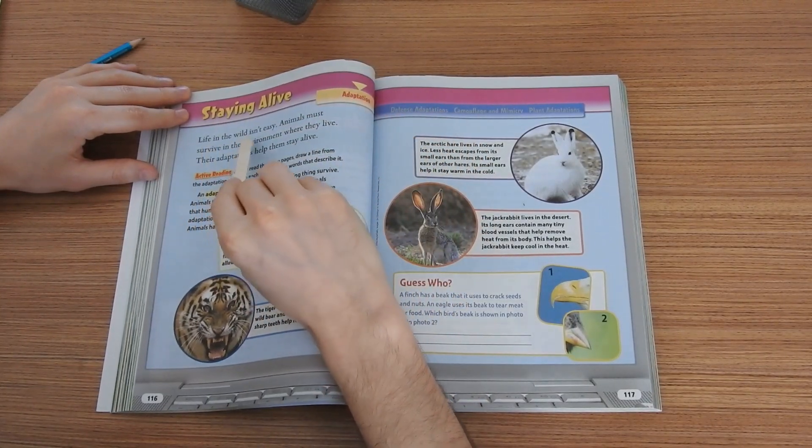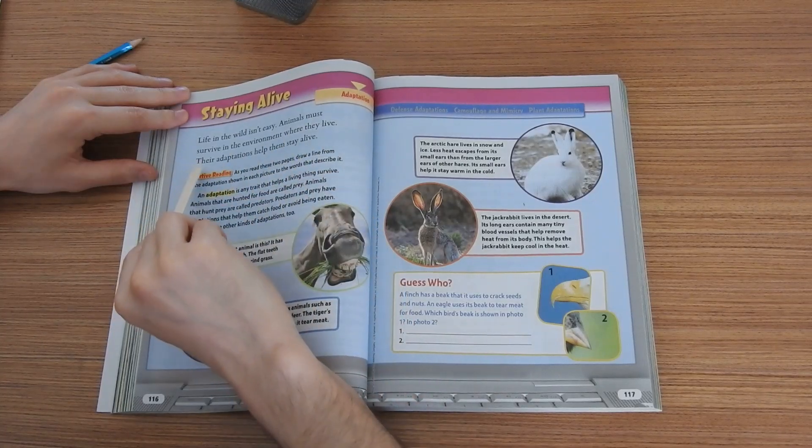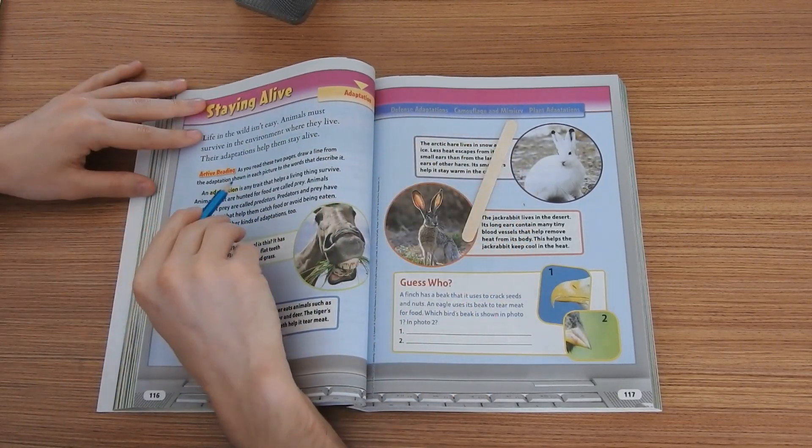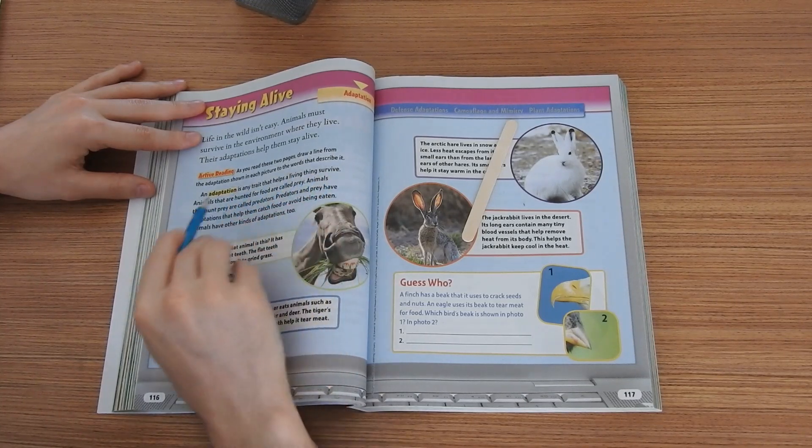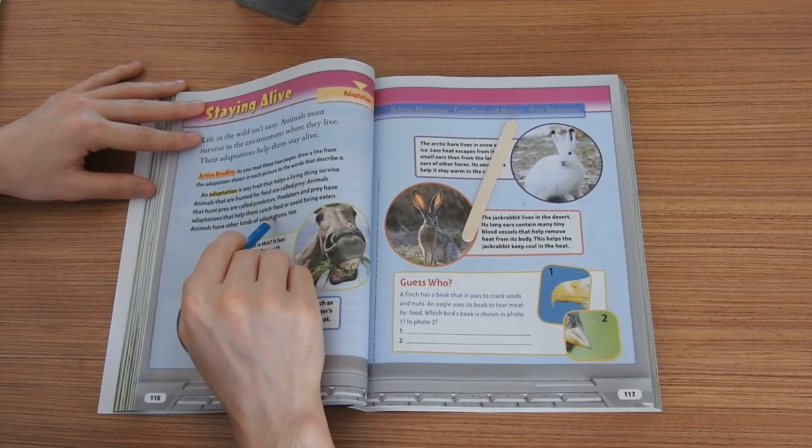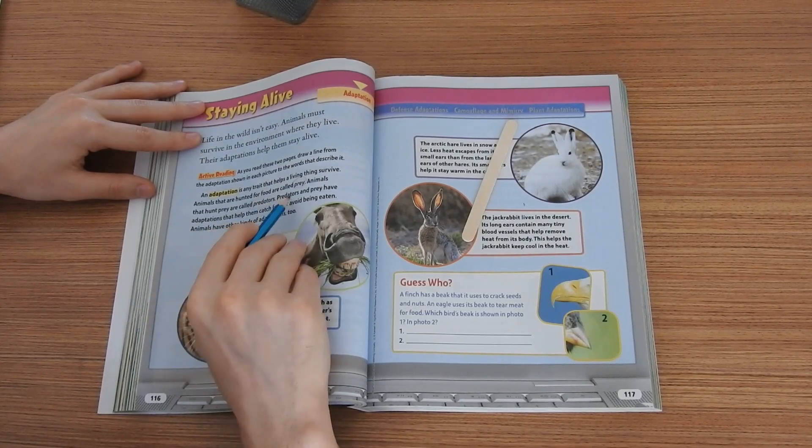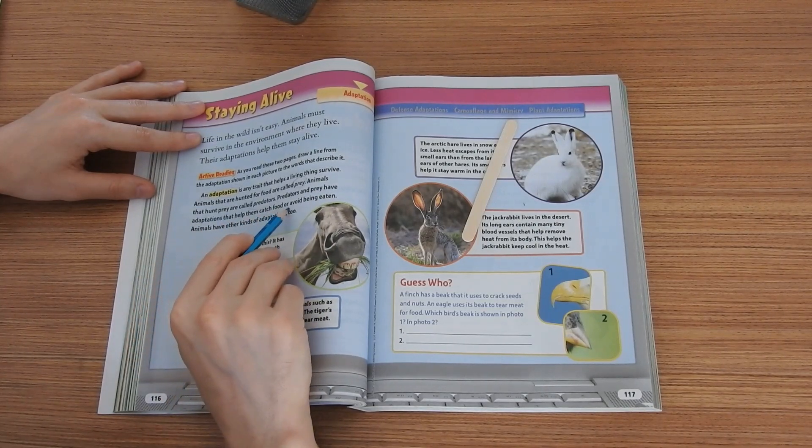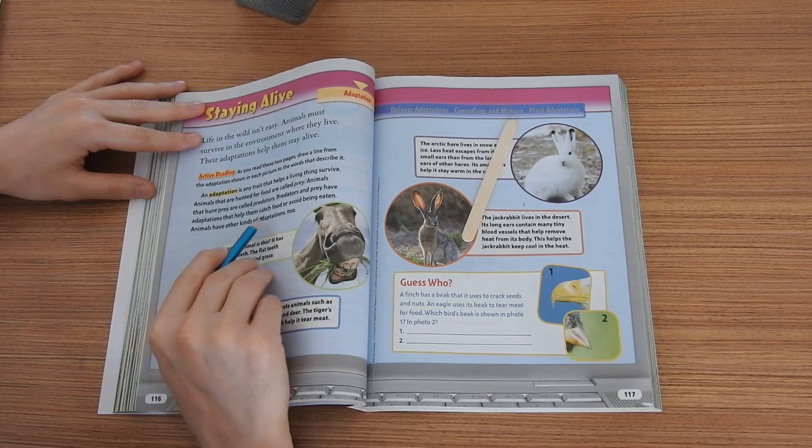Life in the wild isn't easy. Animals must survive in the environment where they live. Their adaptations help them stay alive. An adaptation is any trait that helps a living thing survive. Animals that are hunted for food are called prey. Animals that hunt prey are called predators. Predators and prey have adaptations that help them catch food or avoid being eaten. Animals have other kinds of adaptations too.